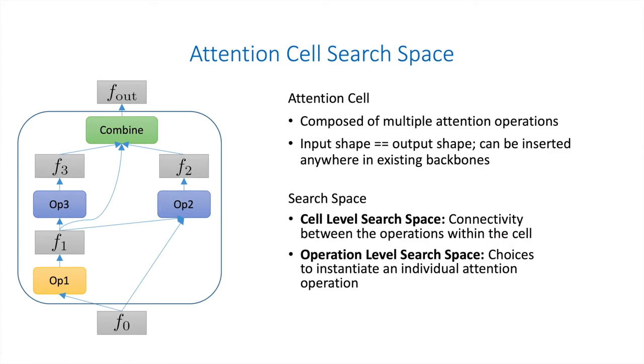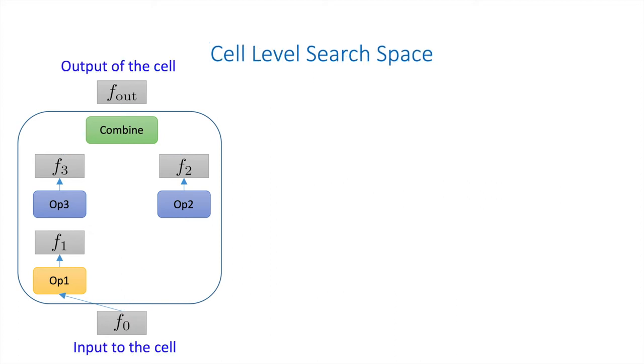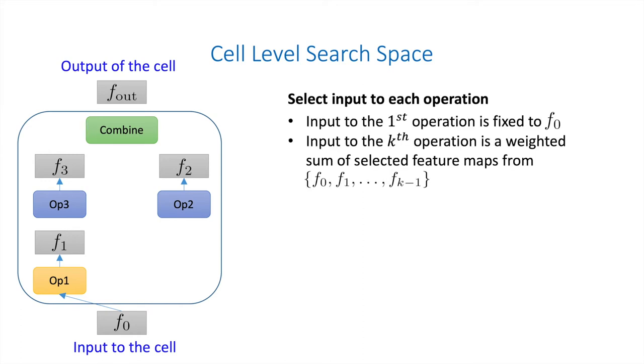We construct an attention cell by composing multiple attention operations. We also enforce the input and output of the cell to have the same shape, such that the attention cell can be easily inserted anywhere in existing backbones. The proposed search space contains a cell-level search space and an operation-level search space. In the cell-level search space, we need to determine the connectivity between the operations. In other words, we need to select the input to each operation.